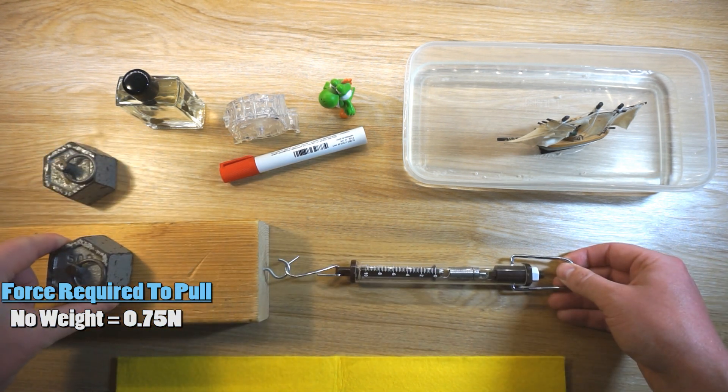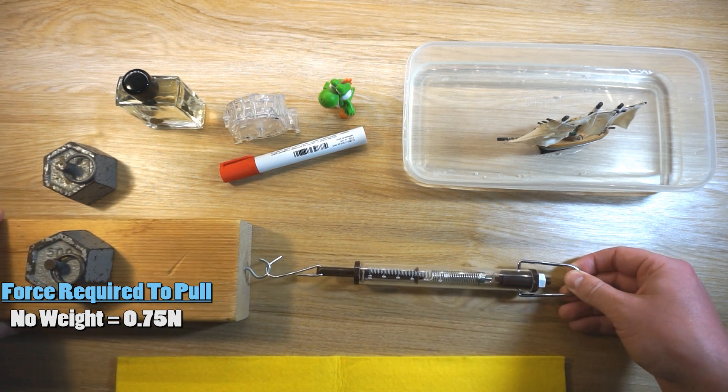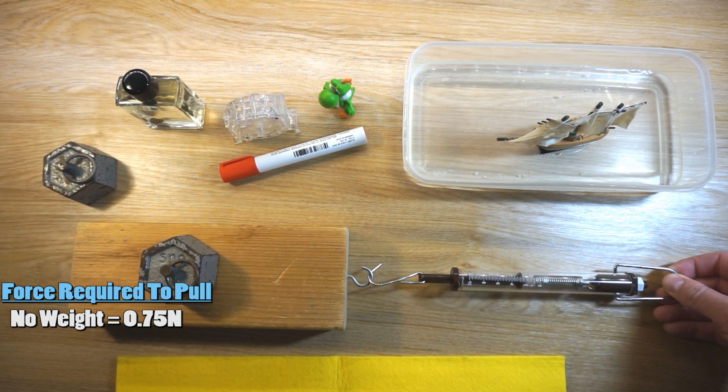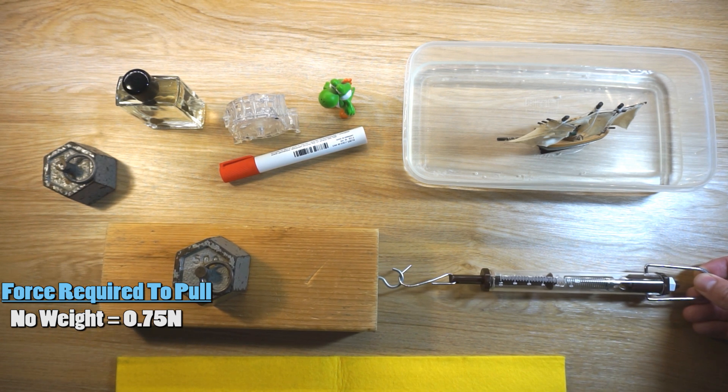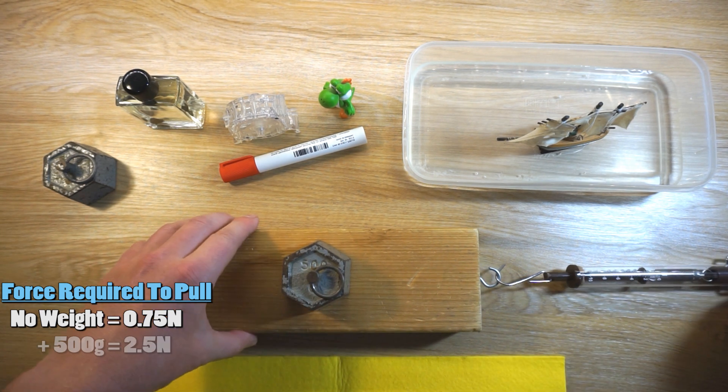Now we're going to do the same thing but add a 500 gram weight on top of the wood and then pull it, so adding the weight increases the force between the two surfaces. Sure enough, after adding the 500 gram weight, it now takes 2.5 newtons of force to pull the block.